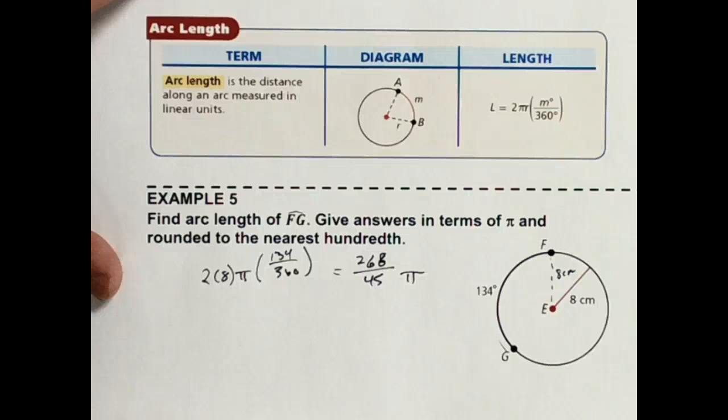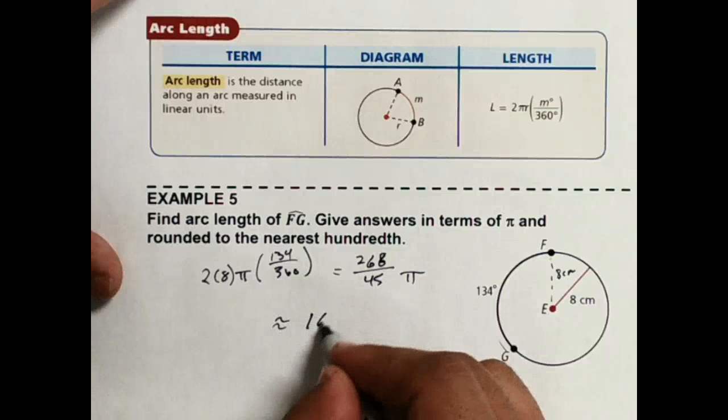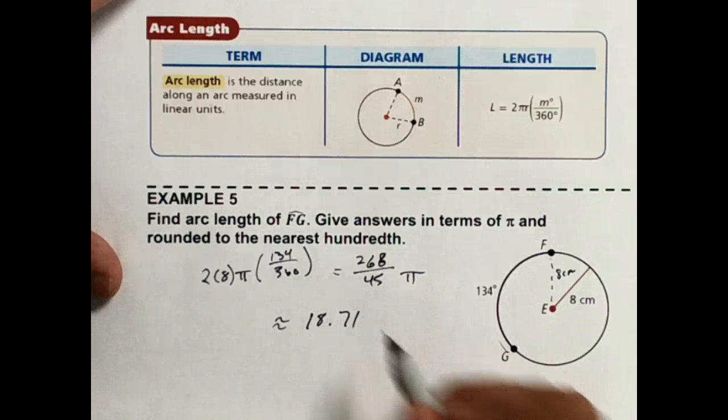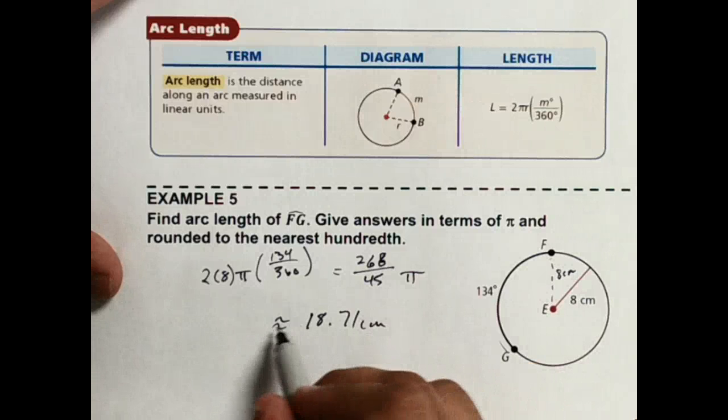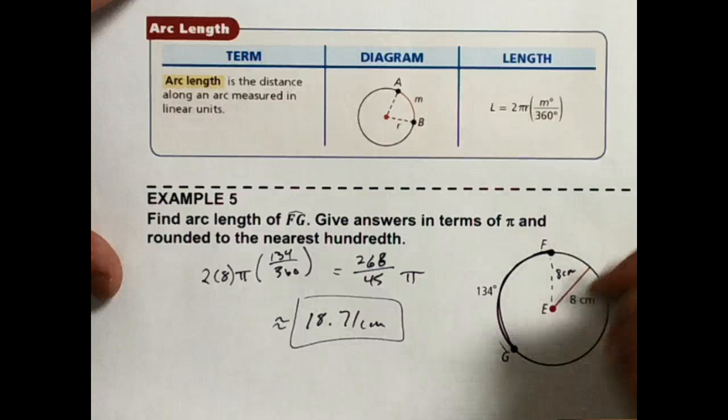Now, if I put that in the calculator round to the nearest hundredth, like it says, that's going to be about 18.71 centimeters. That would be the length from here, from F to G.